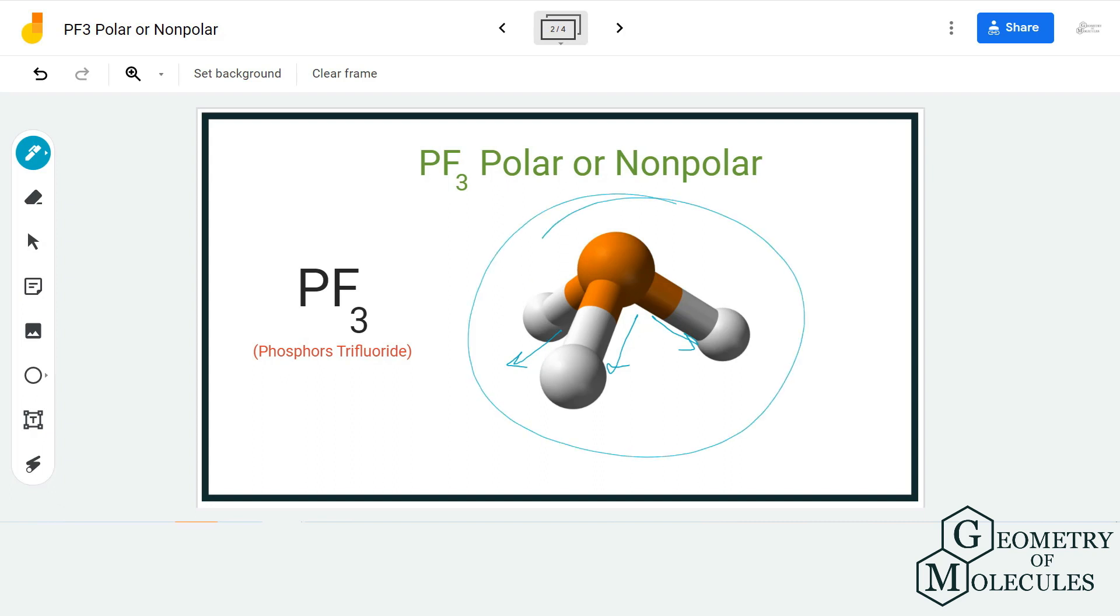The direction will be towards a fluorine atom and as a result there is a non-zero net dipole moment in this molecule, which makes PF3 a polar molecule.